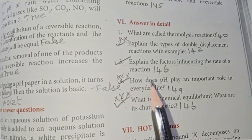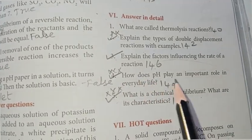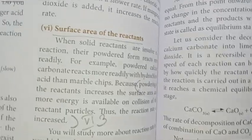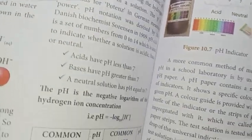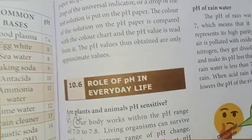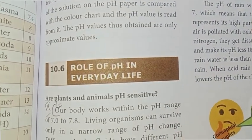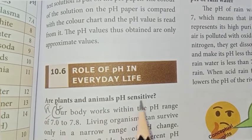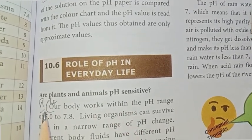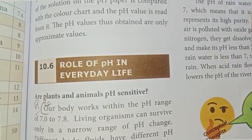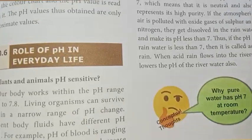Fourth one: how does pH play an important role in everyday life? Page number 149. Our plants and animals are pH sensitive. Our stomach produces hydrochloric acid.